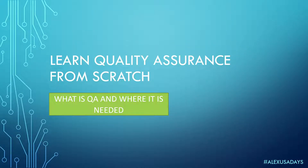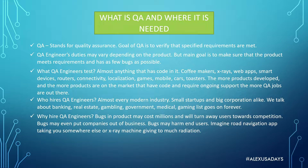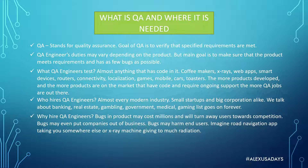What is QA and where is it needed? QA stands for quality assurance. The goal of QA is to verify that specified requirements are met. There's a product, it has to have some requirements — what it should do, how it should do it, how often, how much load it can take, and so on. Quality assurance is the process that makes sure that in the end, when the product is out, it follows all those requirements and is as bug-free as possible.